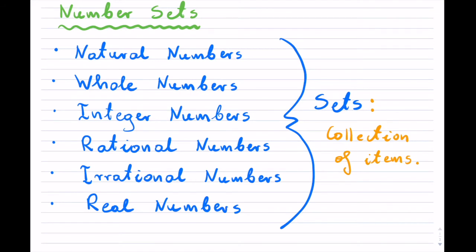Number Sets. So in math, you run into numerous sets of numbers that you use for particular applications. Now a set, as you see on the right hand side, is just a collection of items under a certain characteristic where we can define that characteristic.